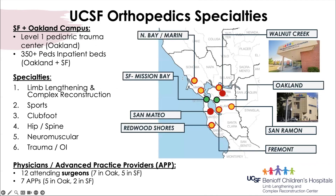This map is a visual representation of how we as a center interface within the greater Northern California region. We work as a hub-and-spoke model with our cross-bay team in Oakland serving as the main hub and level one trauma center, with multiple satellite facilities in surrounding cities. Our Oakland institution is broken down into six subspecialties, seven attending fellowship-trained orthopedic surgeons, and five advanced practice providers, including four physician assistants and one nurse practitioner.